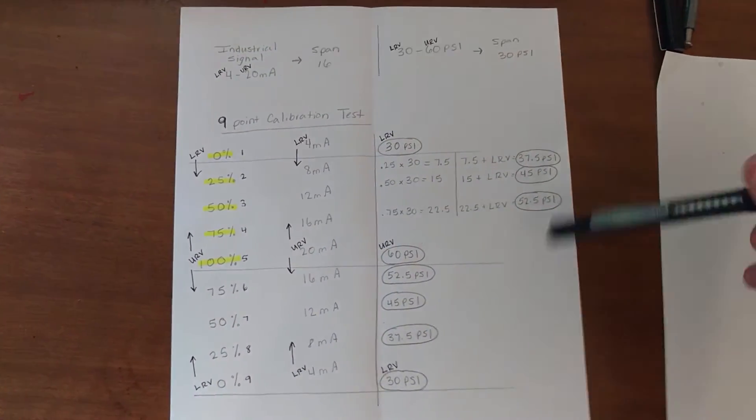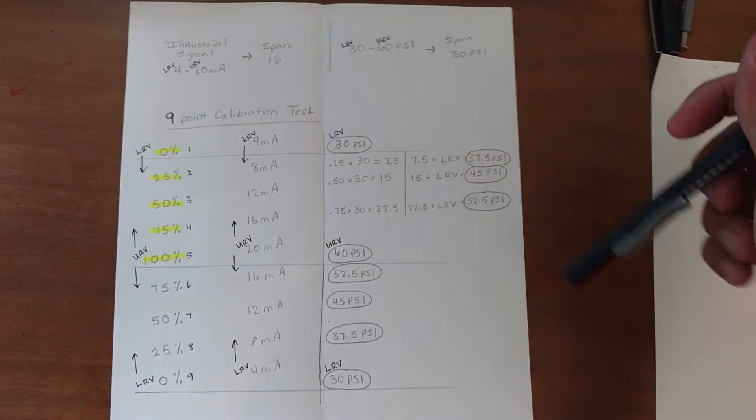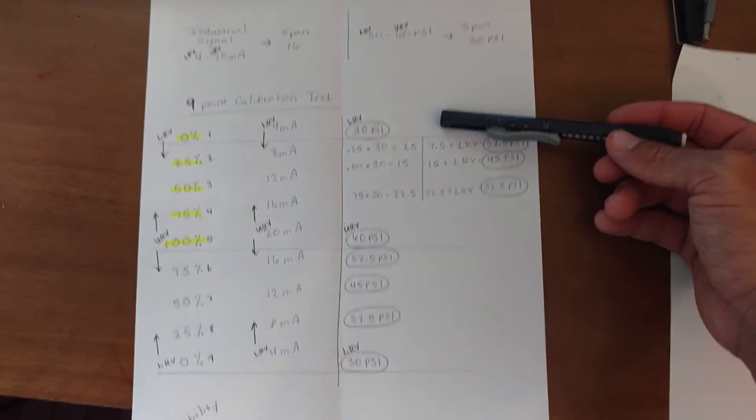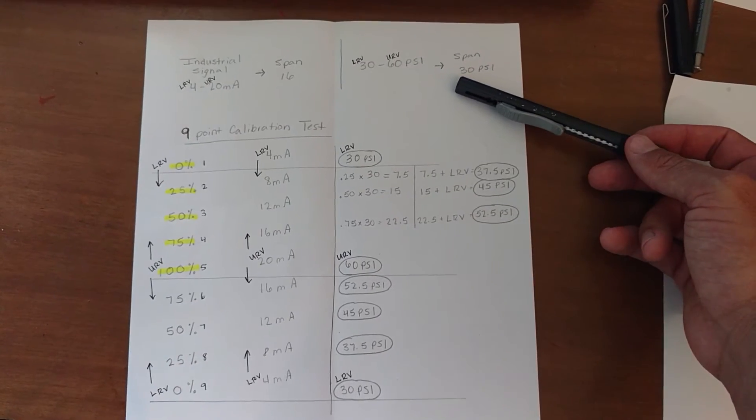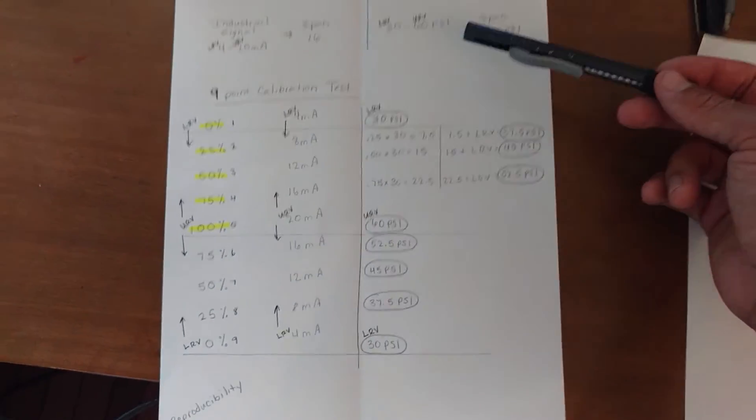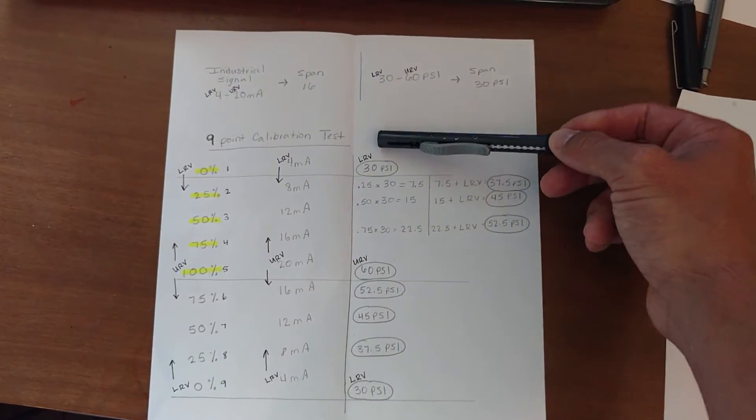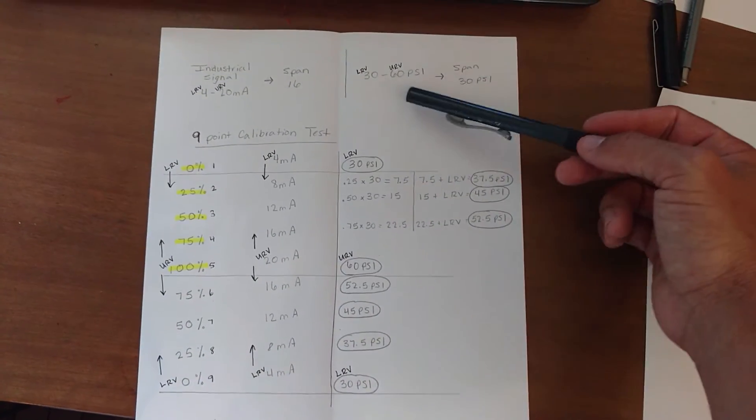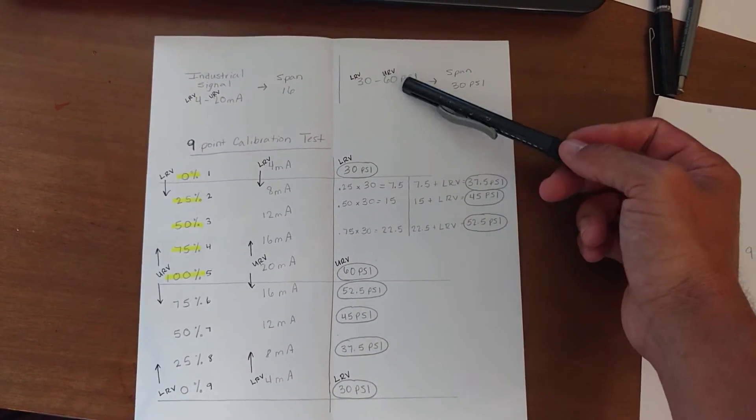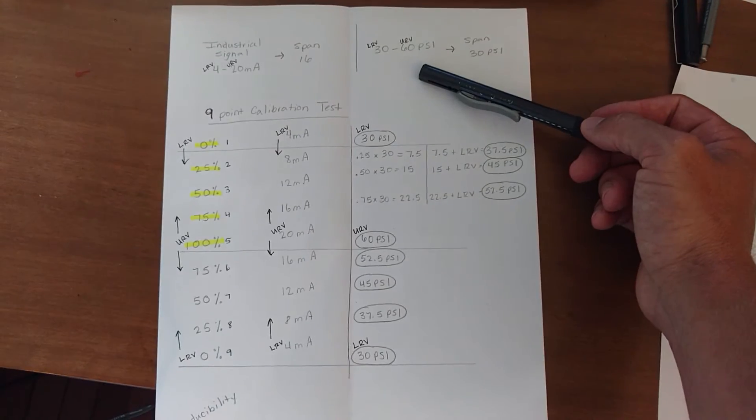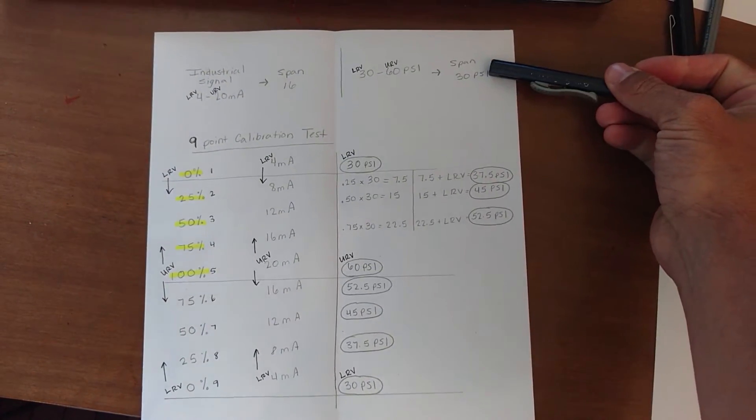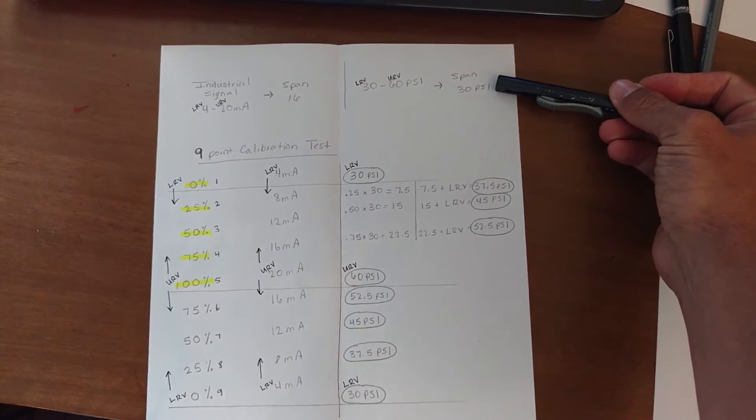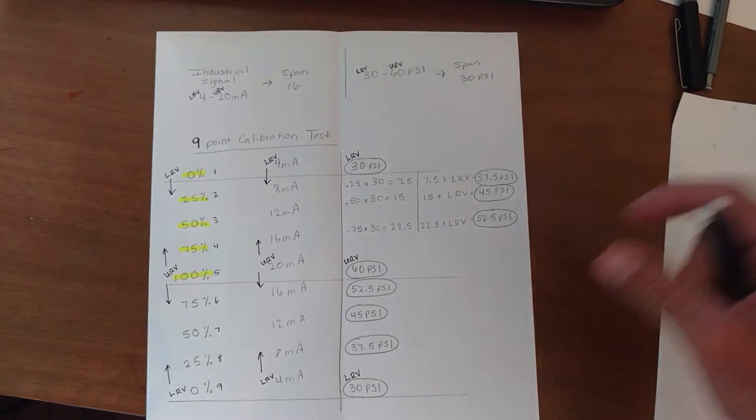So now here we are. We want to find our nine points because we want to calibrate a pressure transmitter and we want to test it with our nine-point calibration test. We see that our LRV is 30, our URV is 60. What do we want first? We want the span. Everything is reliant upon the span. And in this case, our span is 30 psi.